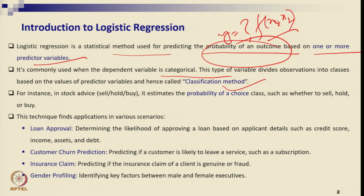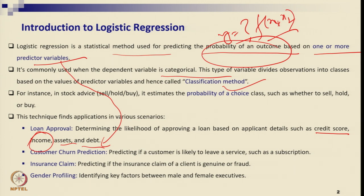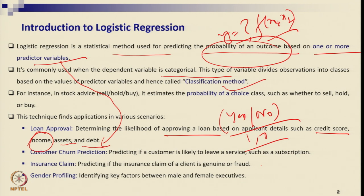For example, in the stock market, whether to buy, sell, or hold a stock — the outcome is a yes/no kind of thing. In banking, whether to approve a loan or not: the predictor variables could be the income, assets, debt, and credit score of the person. Based on those, the bank decides whether to approve the loan or not — that decision, 1 or 0, is what logistic regression finds, calculated through a probability outcome.